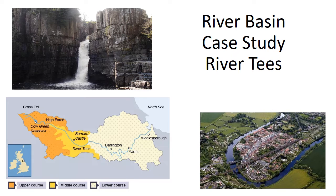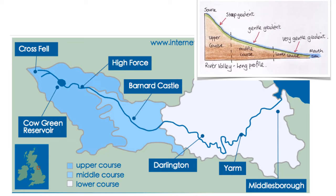For GCSE geography, our river basin case study is the River Tees. The River Tees is in northern England with its source at Crossfell on a mountain there and ending at the North Sea. You will already be familiar with some of the features along the River Tees in its upper course, middle course and lower course.